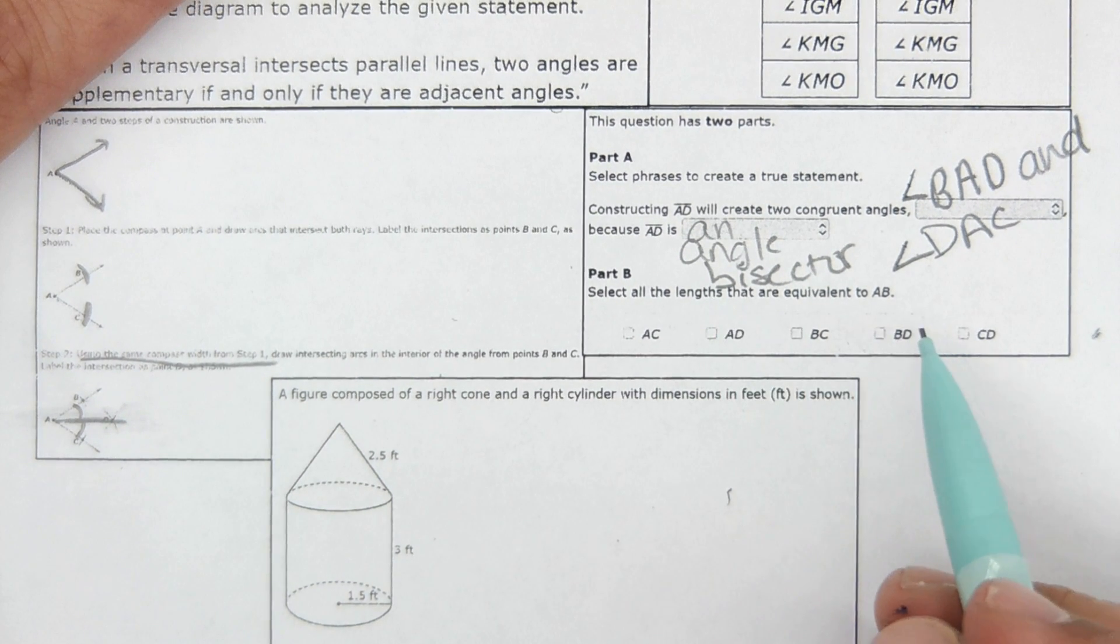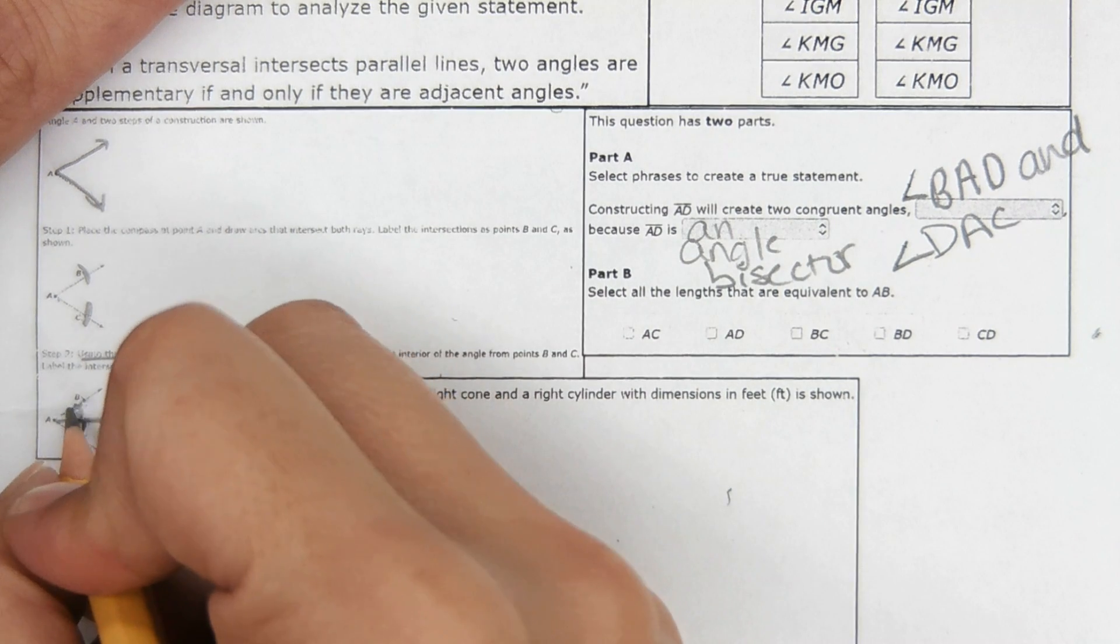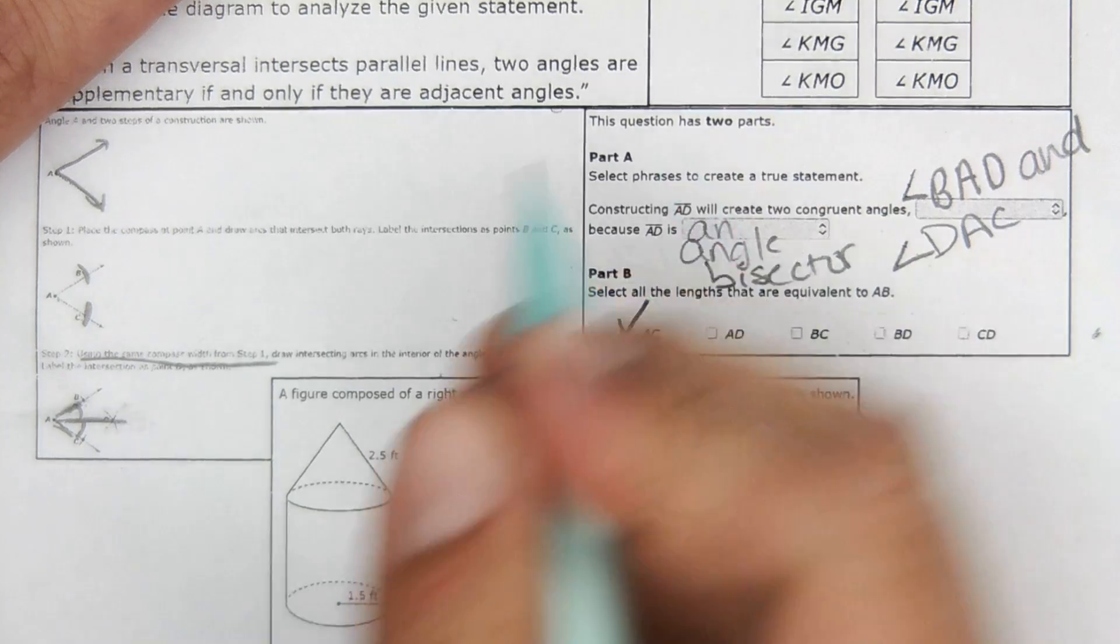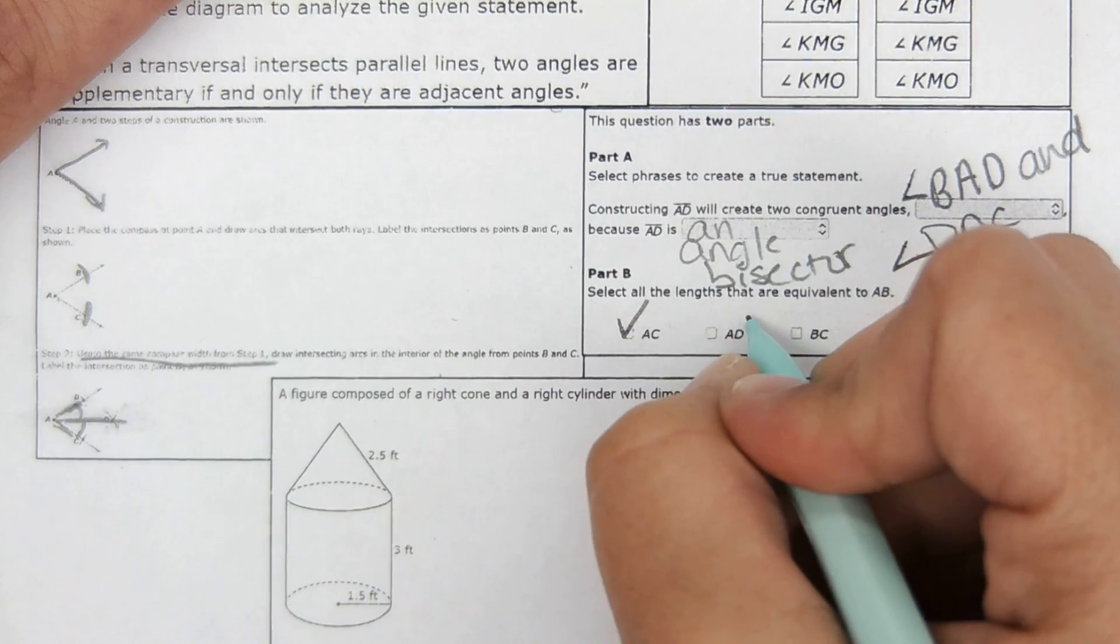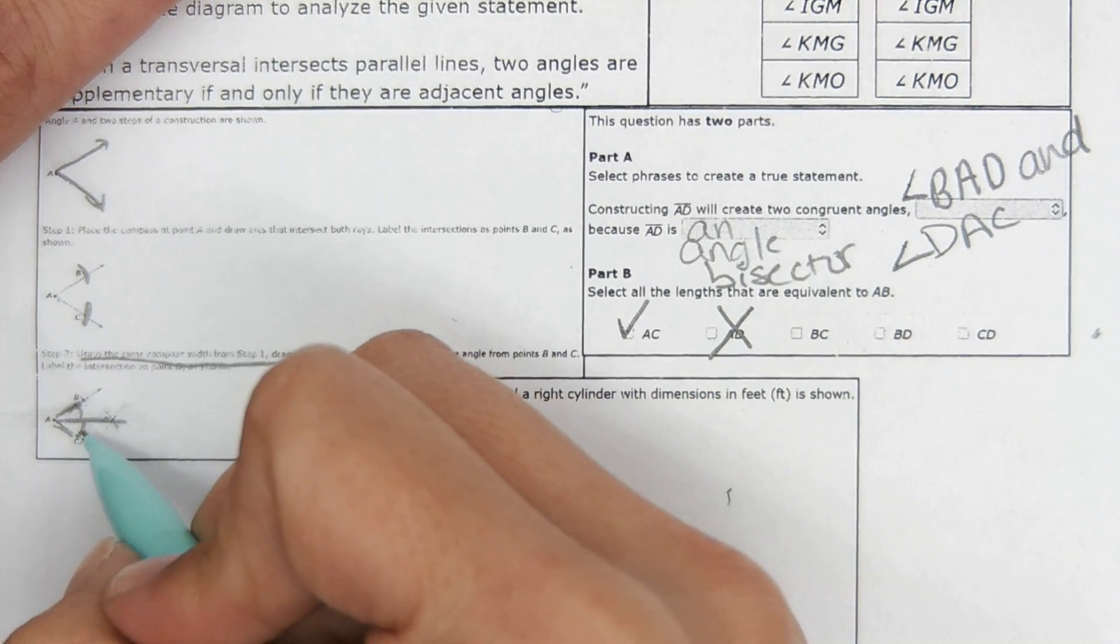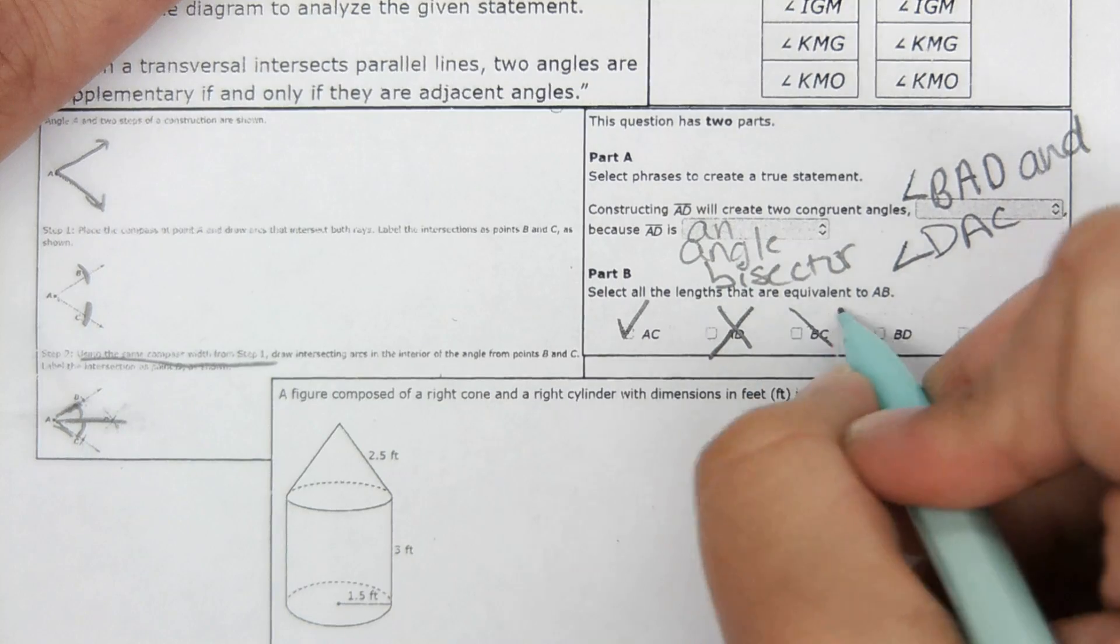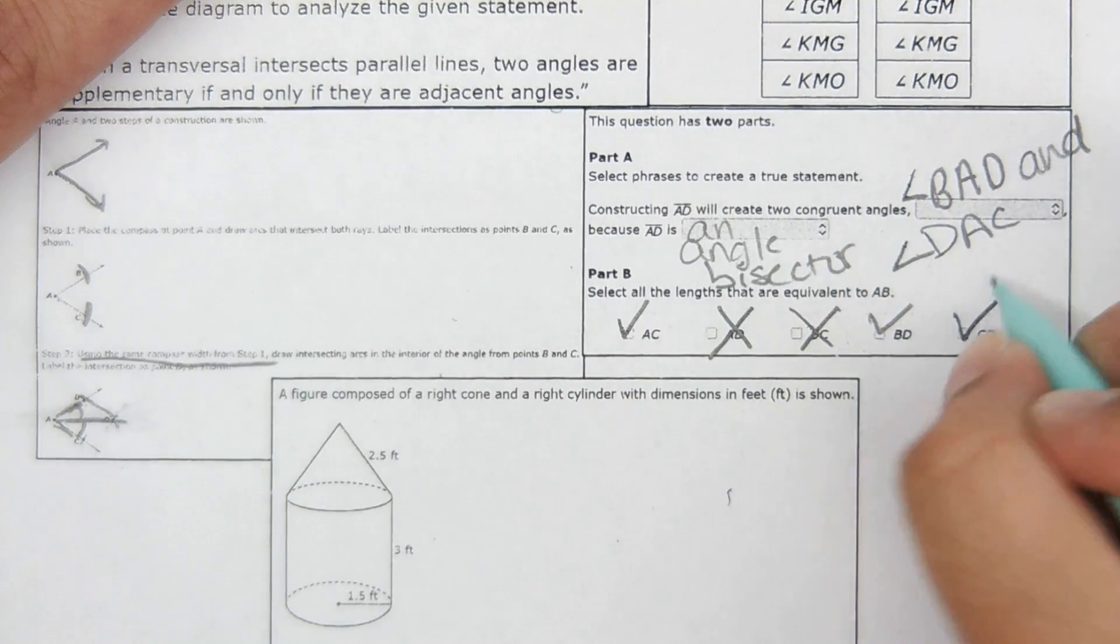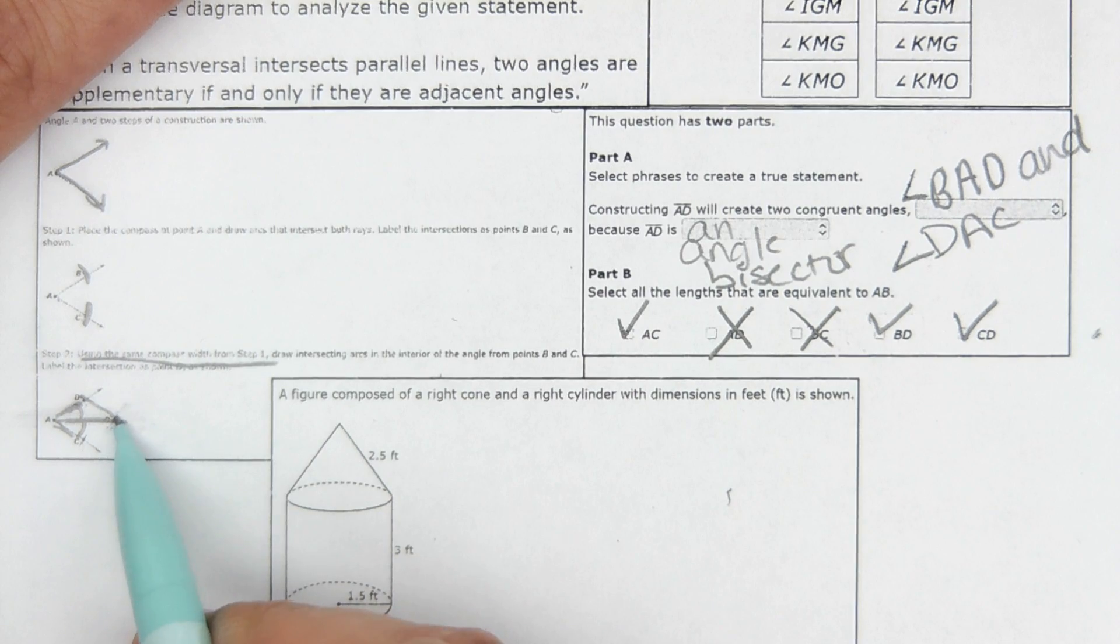And then select all the lengths that are equivalent to AB. Well, AB is right here. So AC would be equivalent, yes. AD would not be the same length, so no to that. BC, no. BD, yes. And CD, yes, because it said it used the same compass measurement to make those marks.